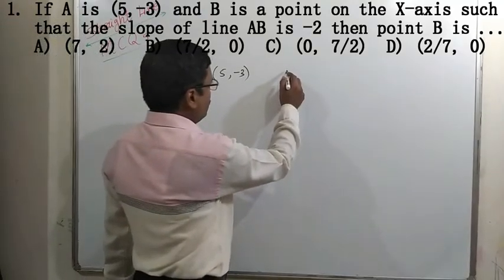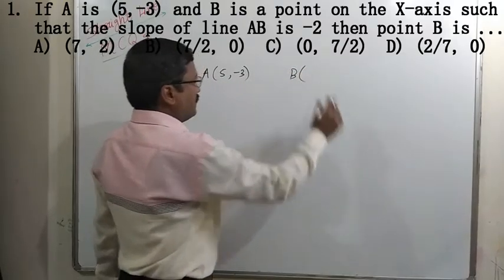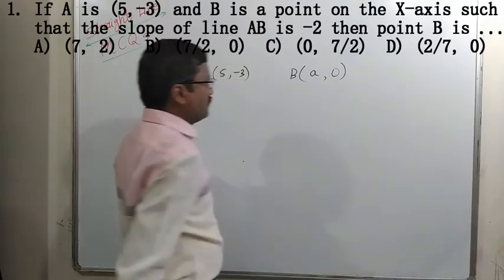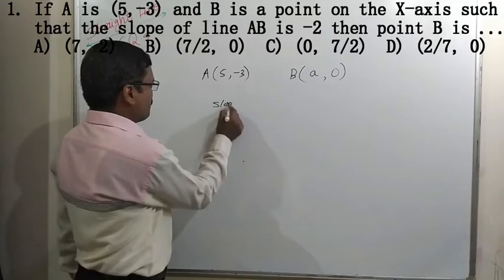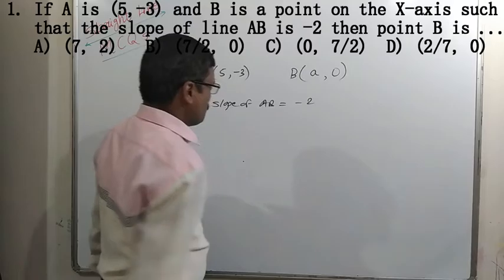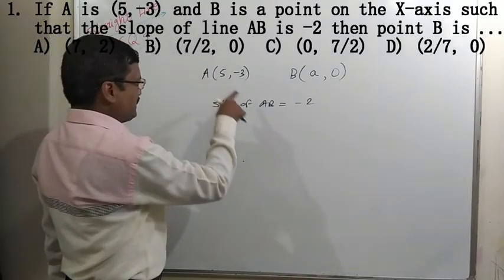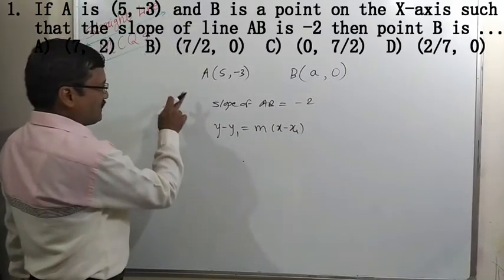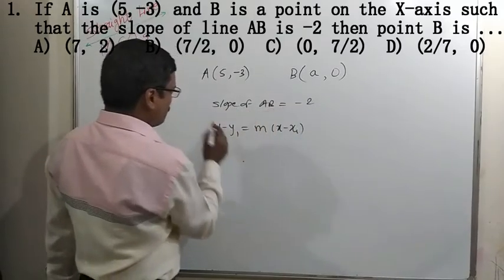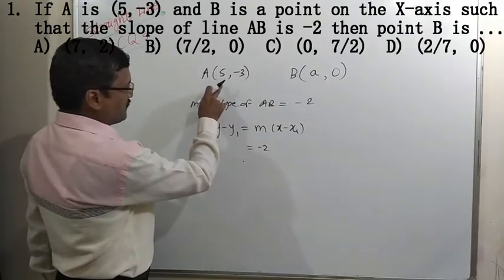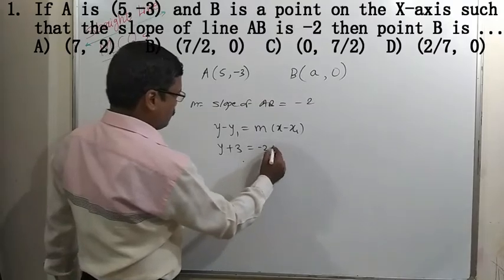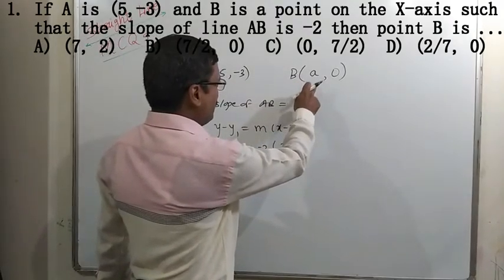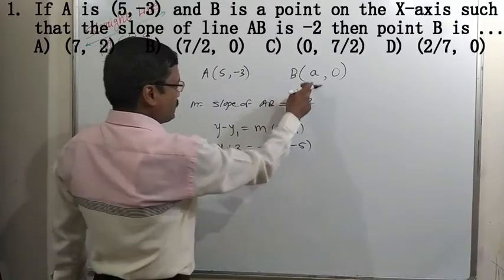Point A is given as (5, -3) and the line passes through point A and cuts the x-axis at point B. Since B lies on the x-axis, its y-coordinate is 0, so coordinates of B are (a, 0). The slope of line AB is given as -2. We know the line passing through a point with known slope, so its equation is y - y1 = m(x - x1). Here slope m = -2 and the line passes through (5, -3).